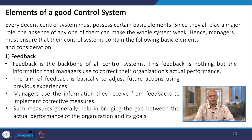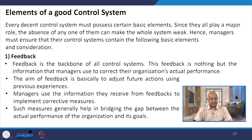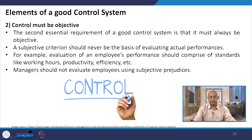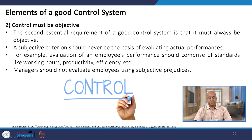Managers use information received from feedback to implement corrective measures, which generally help bridge the gap between actual performance and organizational goals. The second essential requirement of a good control system is that it must always be objective — subjective criteria should never be the basis for evaluating actual performance.